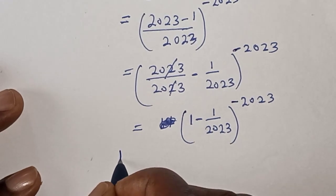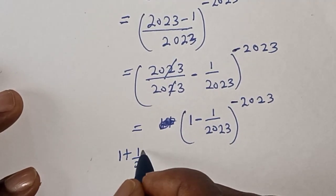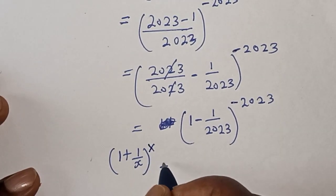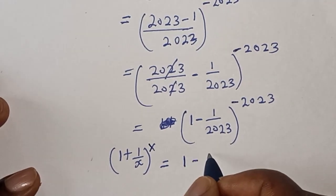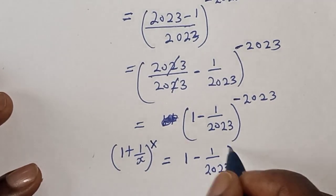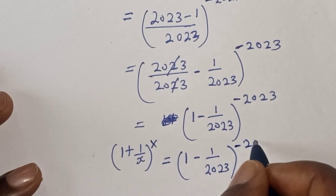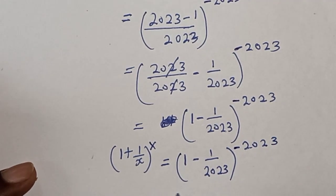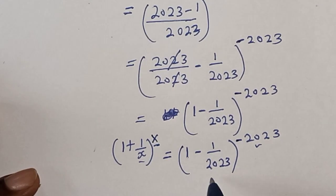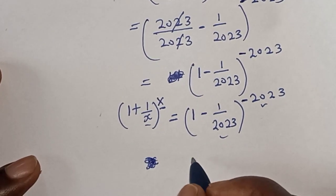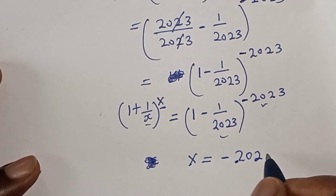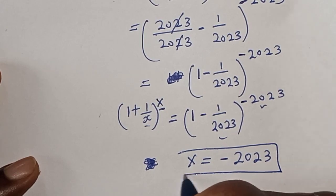Recalling initially that our expression has the form (1 + 1/s)^s, we compare: (1 - 1/2023)^(-2023) matches this form with s = -2023. By comparing both expressions, s is equal to minus 2023, and that is our final answer.